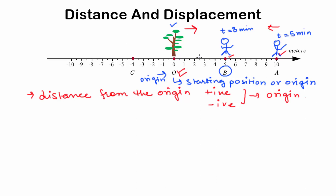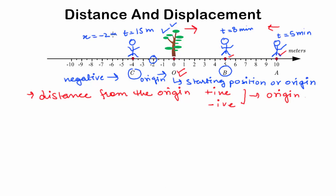Now the position of the man can be negative in the sense that if he keeps moving towards the left, crosses the tree, and is at 4 meters towards the left of the tree at t equals 15 minutes, his position is represented by point C on the line, which is negative. Hence, if the position of the man is 2 meters from the tree or origin in the negative direction, then his position is x equals minus 2 meters. And if he is at 2 meters from the origin towards the right, then his position is x equals 2 meters.